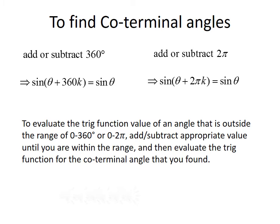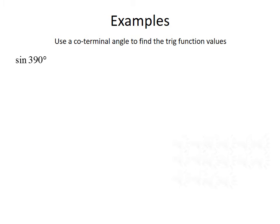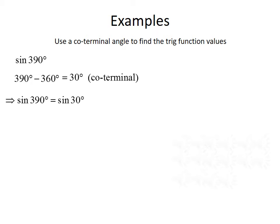To evaluate a trig function for an angle outside 0 to 360 degrees (or 0 to 2π in radians), add or subtract the appropriate value until you're within that range, then evaluate for the coterminal angle. For example, the sine of 390 degrees: since 390 is greater than 360, we subtract 360 to get the coterminal angle of 30 degrees. So sine of 390° equals sine of 30°, which is 1/2.